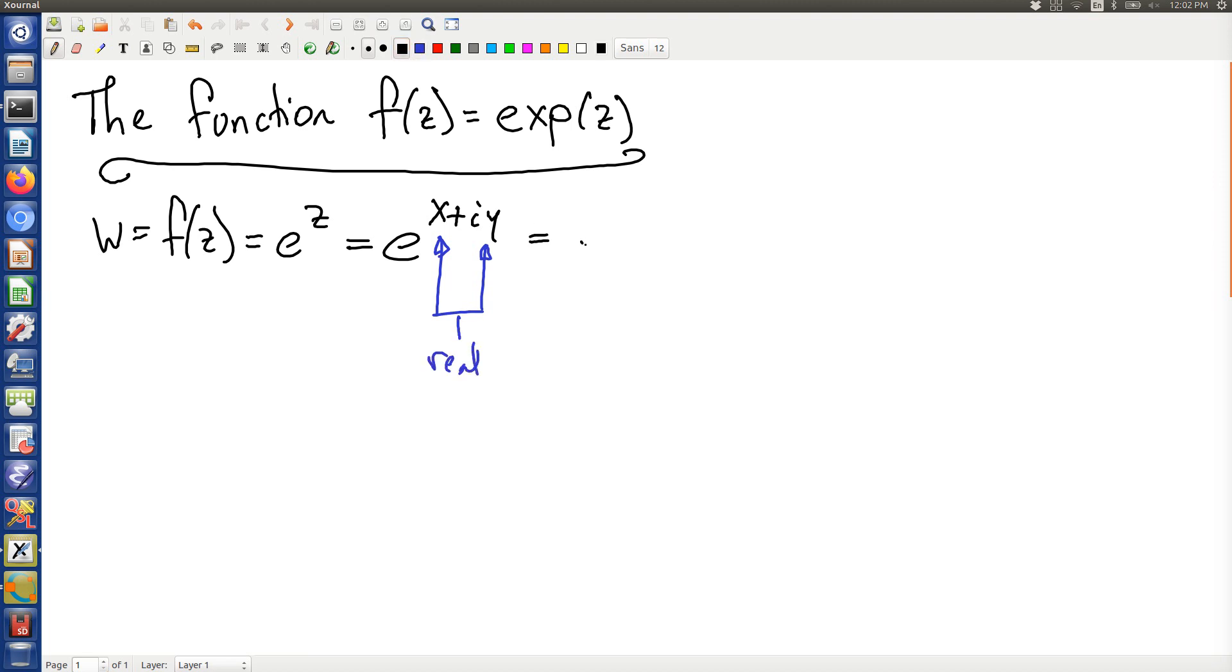If you do that, exponent rules allow you to split it up into a product of two exponential functions, and e to the iy by Euler's identity is easily rewritten.